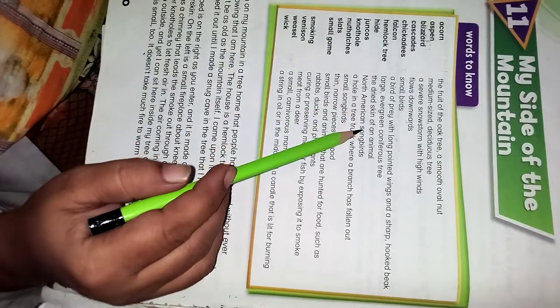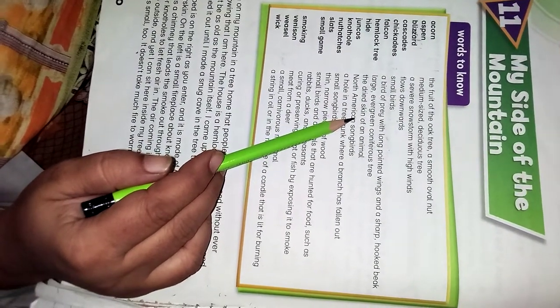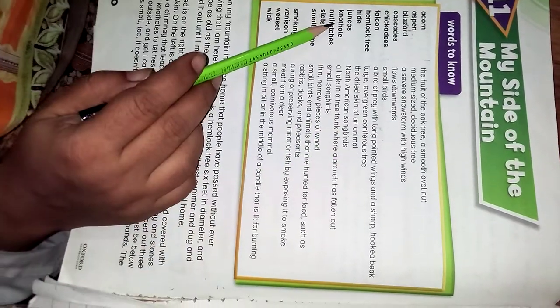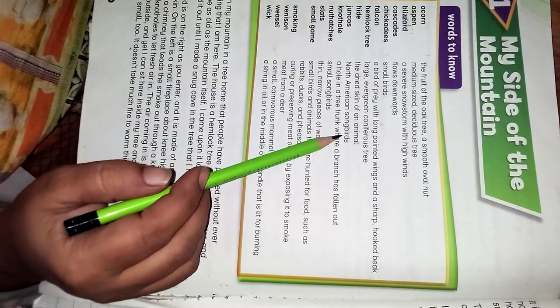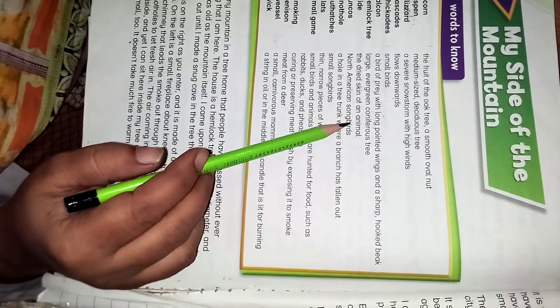Herd: the dried skin of an animal, yanay januar ki sukhi hui khaal. Junkos: North American songbirds. Songbirds hain jo North America mein paaye jaate hain.